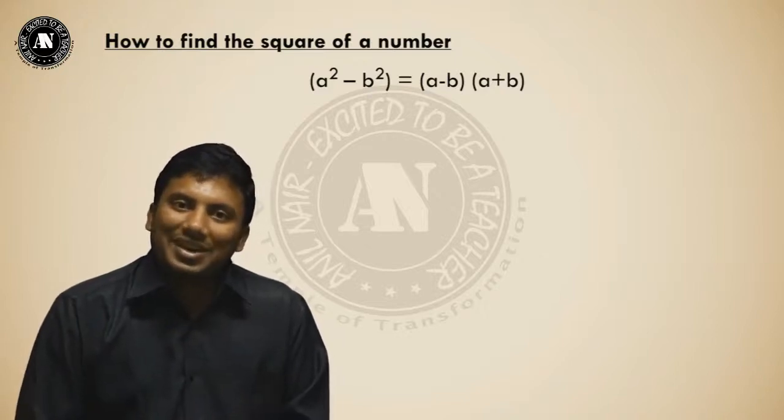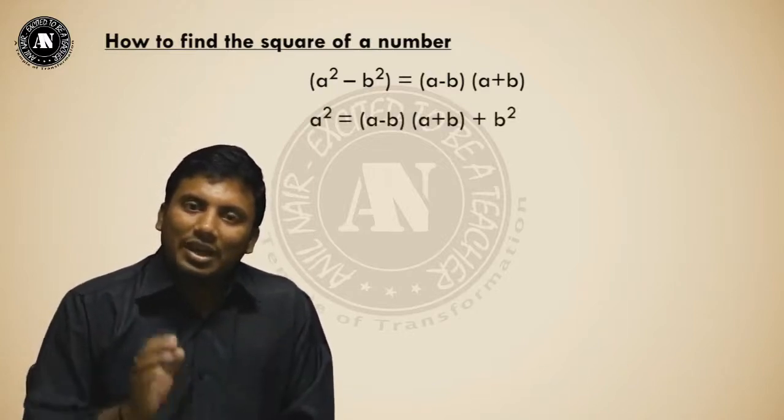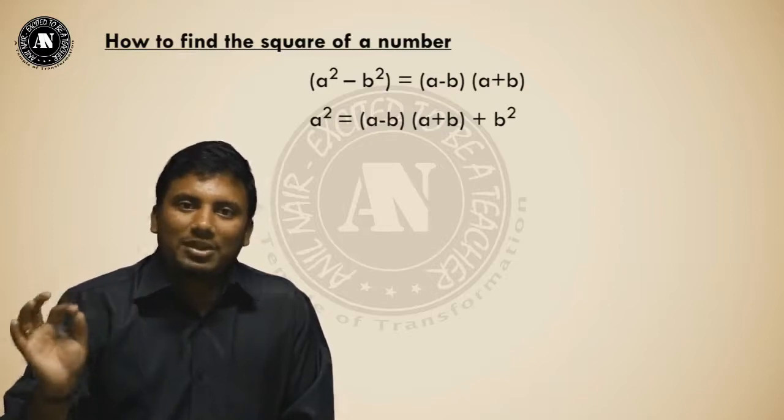a² - b² = (a-b)(a+b). If I write minus b² onto the right hand side, this will become a² = (a-b)(a+b) + b².